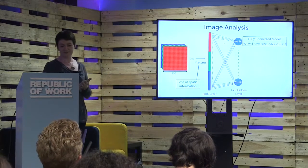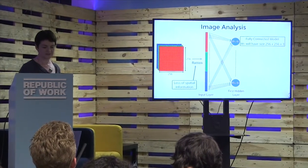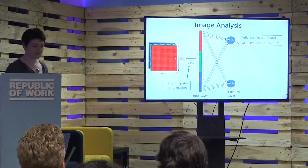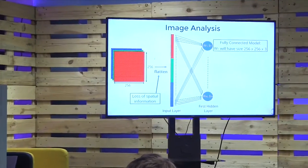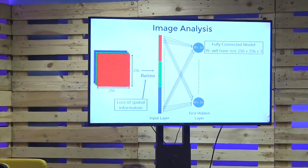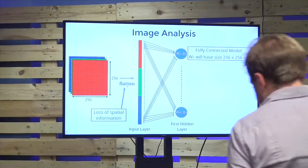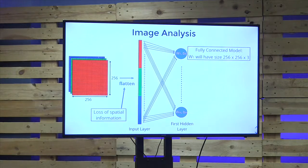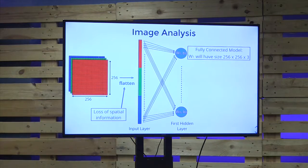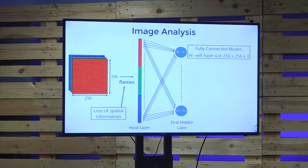It turns out that fully connected networks are not really good for image analysis. If you imagine even a relatively small image — 256 by 256 in dimensions — and if it's a color image, it has three channels: red, green, and blue. To feed it in, you first have to flatten it. When we flatten it, we lose spatial information, which is really important if you're trying to interpret the content of the image. After flattening into a very large 1D array, we have to have connections between every single pixel or RGB value into every single neuron in our first hidden layer.